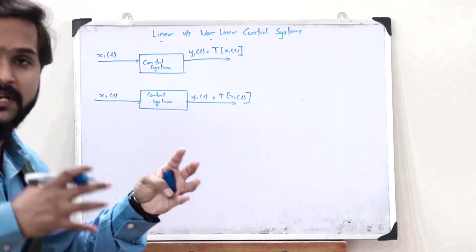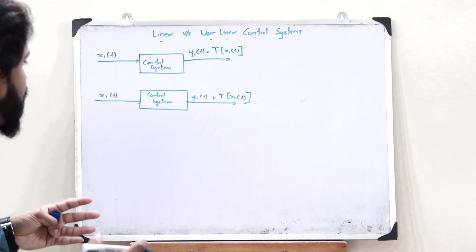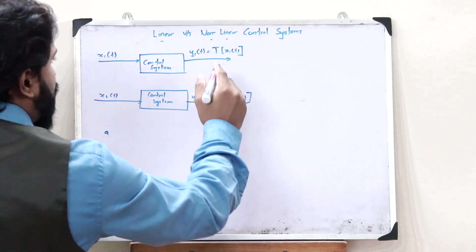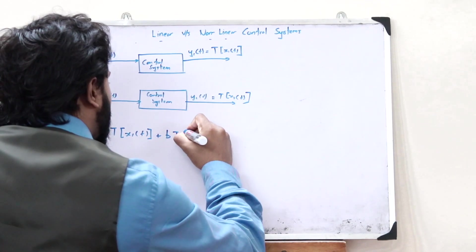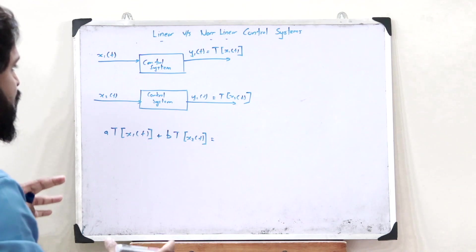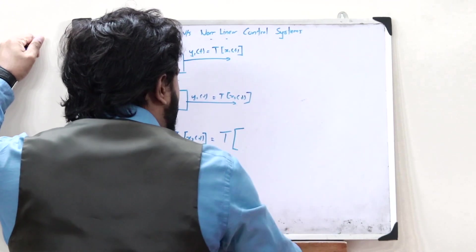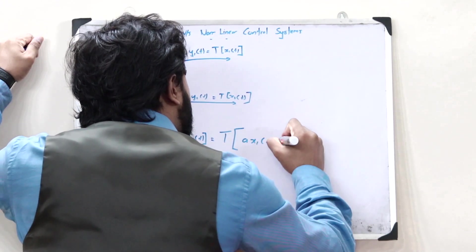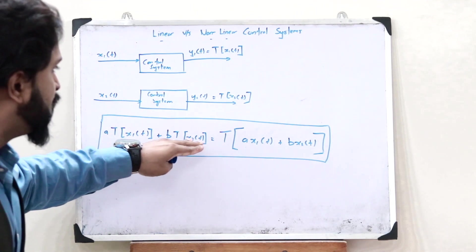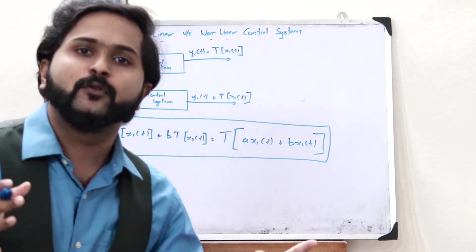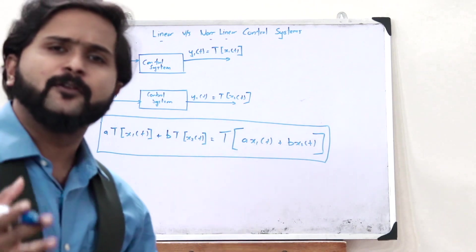A control system is said to be linear if it obeys the superposition principle. The superposition principle states that a·T{x1(t)} + b·T{x2(t)} is equal to the transform of the combined input T{a·x1(t) + b·x2(t)}. If a particular control system obeys this principle, it is said to be linear; if it does not obey this principle, it is said to be a non-linear control system.